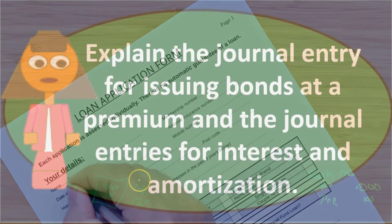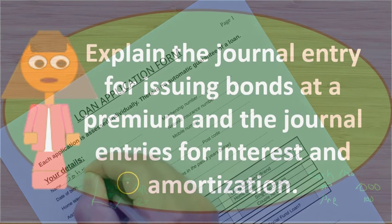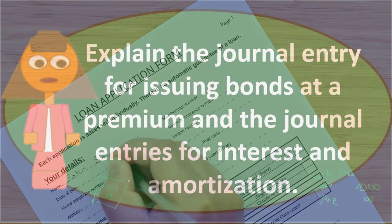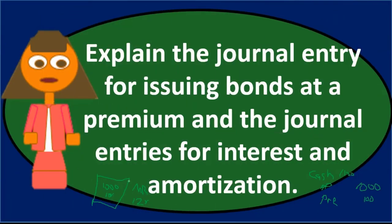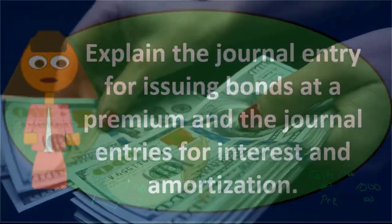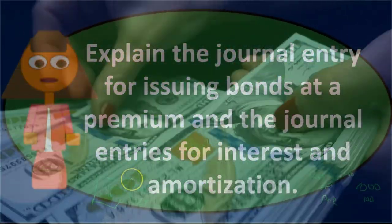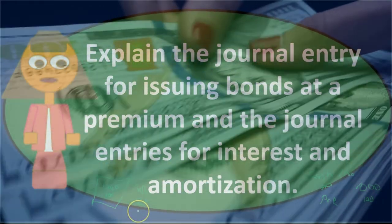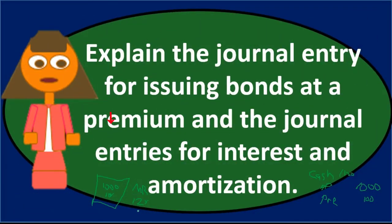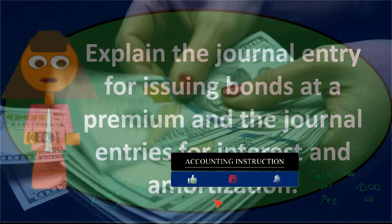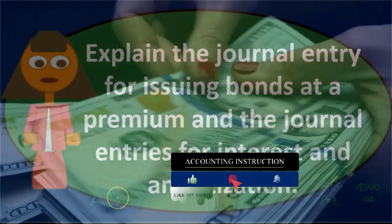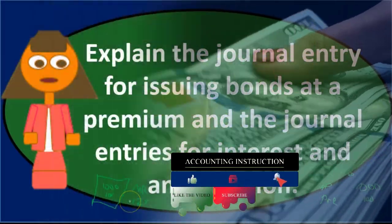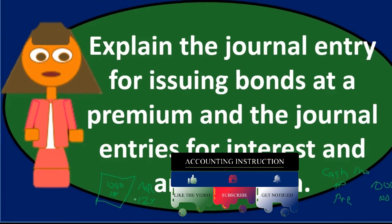If the market rate is 12% and the bond pays only 10%, why would an investor give their money to the business? They could get 12% elsewhere. So the business would have to accept less than $1,000 — that's a discount.